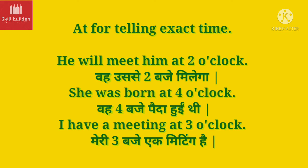Let's learn the first use of 'at', that is for telling exact time. Jo generally hume school mein bataya jaata hai ki 'at' ka use exact time batane ke liye kiya jaata hai. He will meet him at two o'clock. Wahe usse do baje milega. She was born at four o'clock. Wahe chaar baje paida hui thi. I have a meeting at three o'clock. Meri teen baje ek meeting hai. In sabhi sentences mein exact time given tha, isliye humne 'at' use kiya.